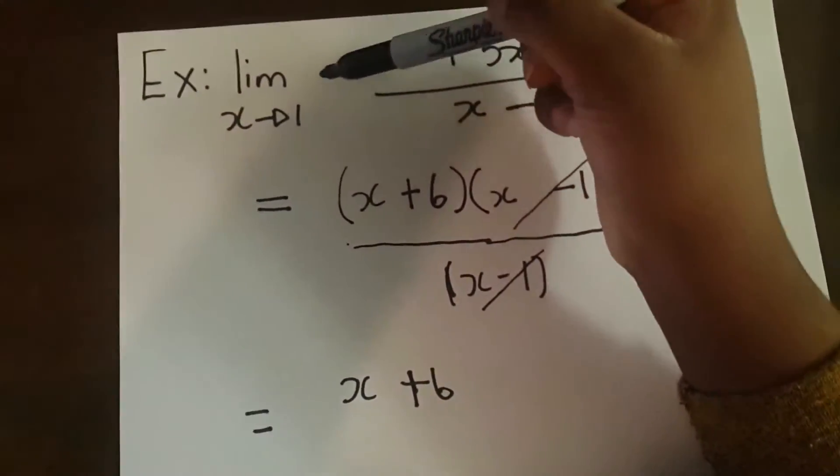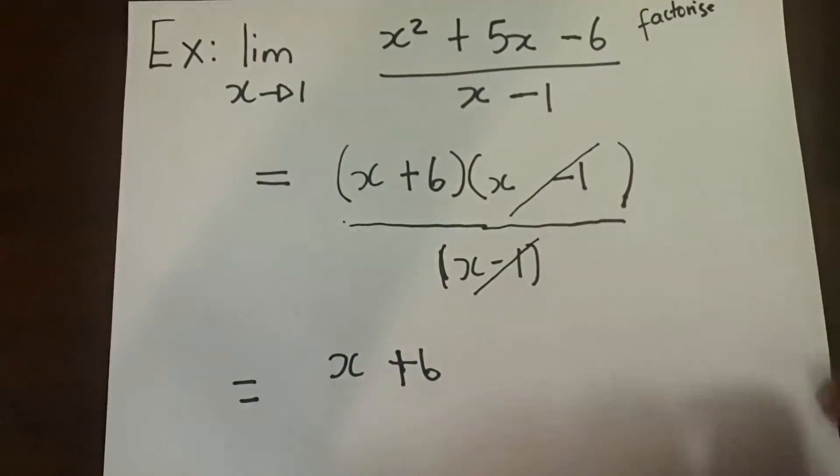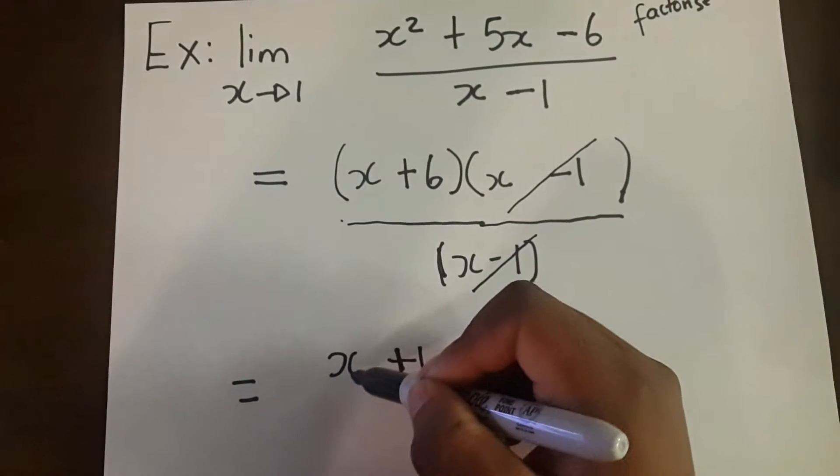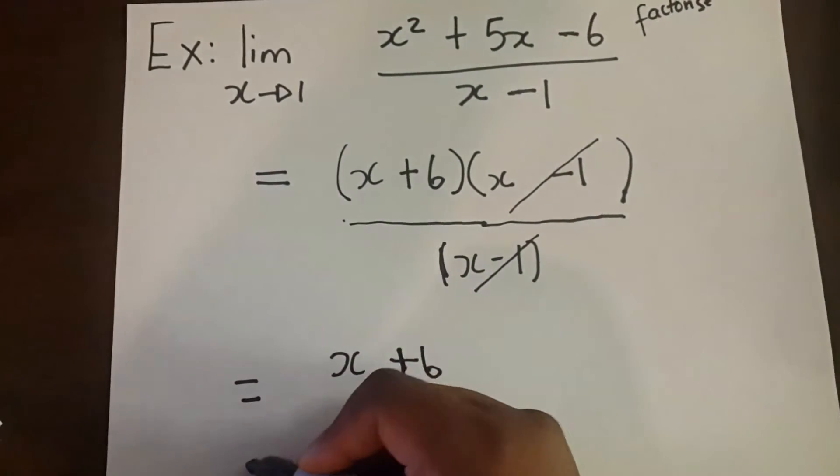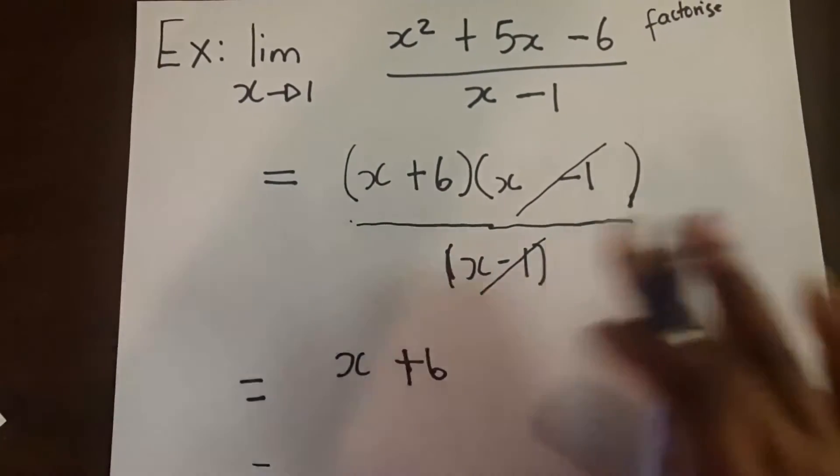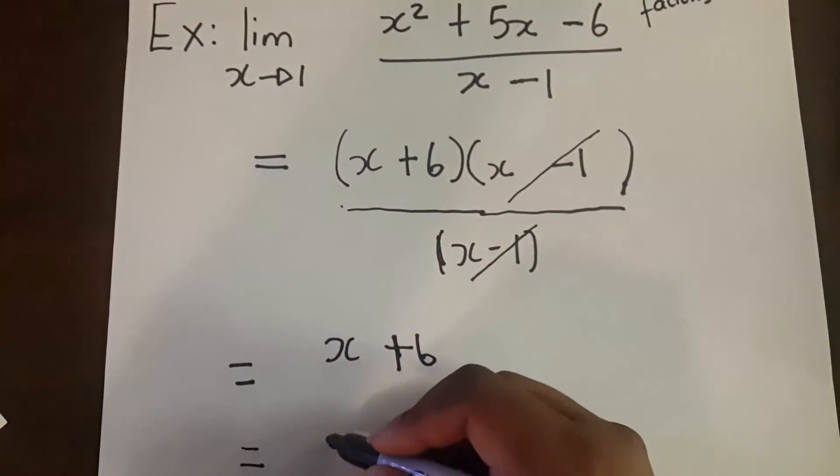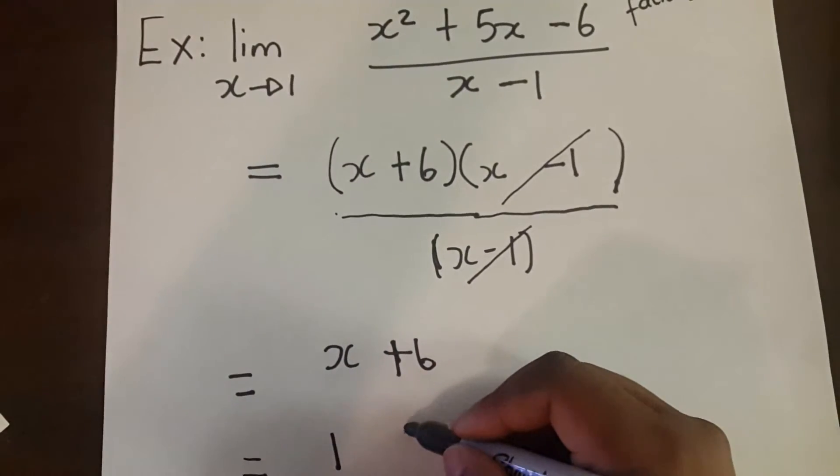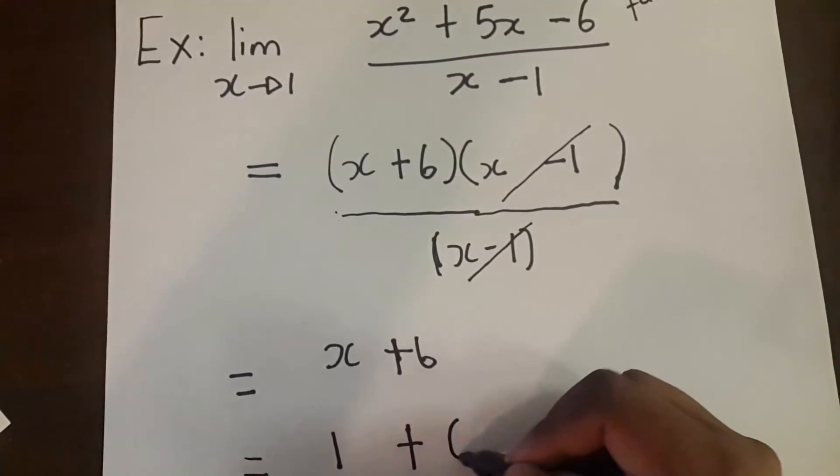But then the question says the limit as x approaches 1, so which means that wherever there is x, you plug in 1. So you put your equal sign here and then you have 1 plus 6.